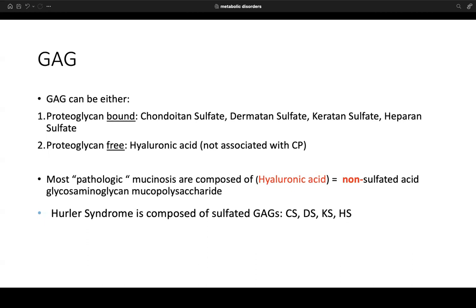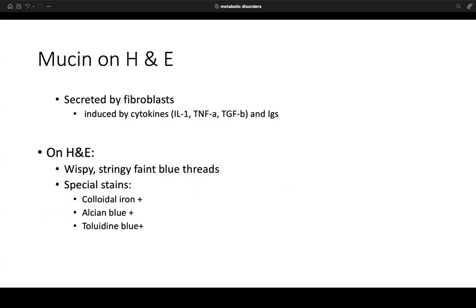Loss of these materials happens in normal aging; however, deposition can occur in various diseases. On H&E staining, mucin is secreted by fibroblasts and induced by cytokines like interleukin-1, TNF-alpha, transforming growth factor beta, and immunoglobulins. It appears wispy, stringy, faint blue threads. Special stains include colloidal iron, Alcian blue, and toluidine blue. Solar elastosis looks like a blue collagen fiber, whereas mucin is thinner with punctate blue stringy appearances.